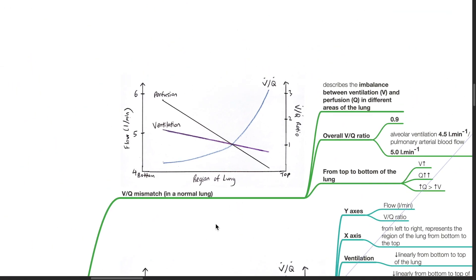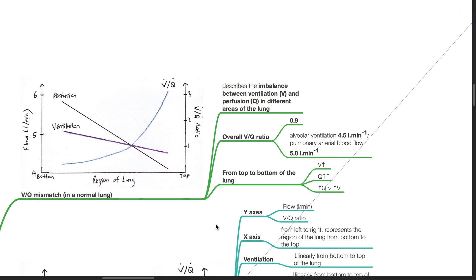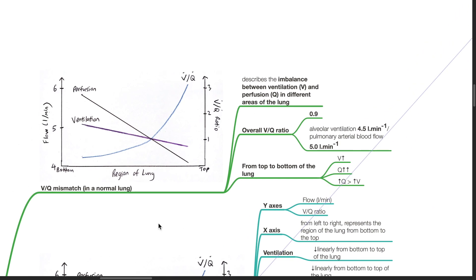VQ mismatch in a normal lung describes the imbalance between ventilation (V) and perfusion (Q) in different areas of the lung. The overall VQ ratio is 0.9, as alveolar ventilation is 4.5 liters per minute divided by pulmonary arterial blood flow of 5 liters per minute. From top to bottom of the lung, ventilation increases and perfusion increases, with the increase in perfusion being greater than the increase in ventilation.